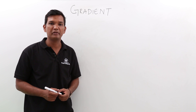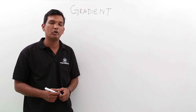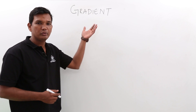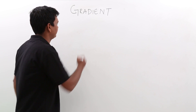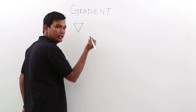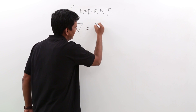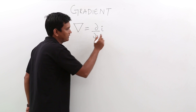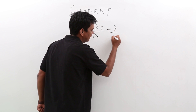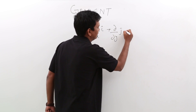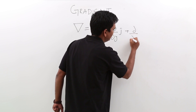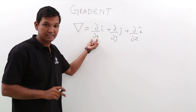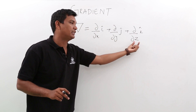In this class, we will be discussing about gradient. It is one of the important topics of electromagnetics. Before we go to gradient, we should understand something called the delta operator. The delta operator is given by del/dx of i-cap plus del/dy of j-cap plus del/dz of k-cap. This represents the partial differentiation — the variation along x, y, and z.